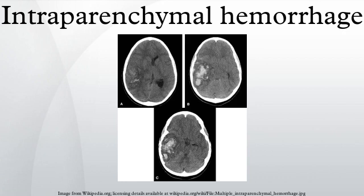Diagnosis: Acute Intraparenchymal Hemorrhage. There are many causes for intraparenchymal hemorrhage; a common cause is secondary to hypertension. These most commonly occur within the basal ganglia, subcortical white matter, cerebellum, thalamus and pons. Hemorrhage into the posterior fossa with mass effect or extension into the ventricular system carries poor prognosis. In younger patients, vascular malformations — specifically AVMs and cavernous angiomas — are more common causes.